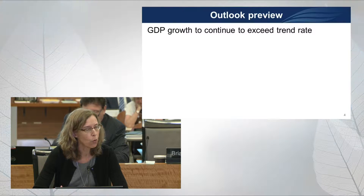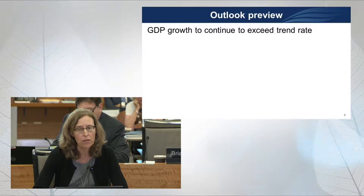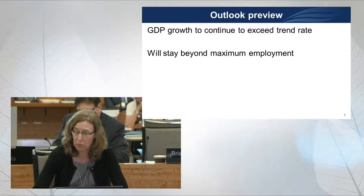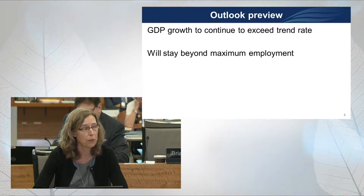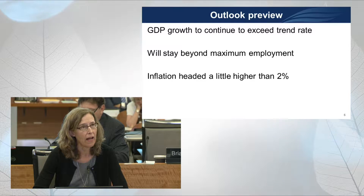So what does the economy look like and where are we headed? GDP growth will continue to exceed the trend rate of growth — the long-run normal sustainable growth. When the economy grows faster than the long-run trend, that goes hand in hand with a tendency for the unemployment rate to decline. We're already beyond maximum employment, so we're forecasting the unemployment rate will stay below the natural rate over the forecast period. With the labor market so tight, we expect inflation to pick up — actually a little higher than 2% over the next two and a half years.